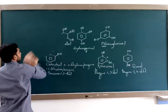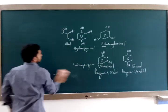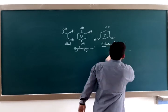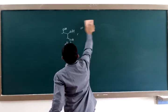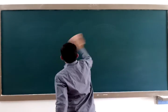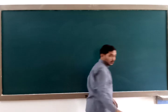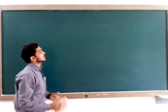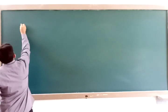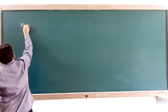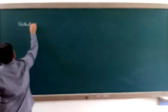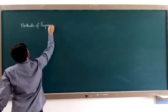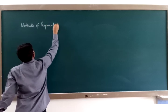So nomenclature is very simple. Now we shall see the methods of preparation — how phenols are prepared. You have seen how alcohols are prepared with different methods. Similarly, phenols also have different methods of preparation.